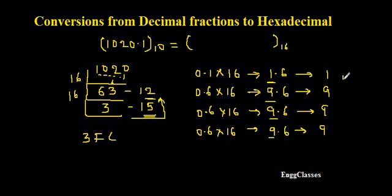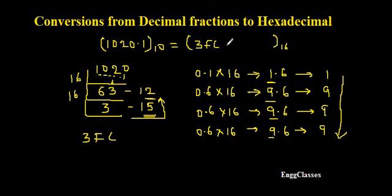I write the hexadecimal equivalent starting from the first digit: 1, 9, 9. So 1020.1 in decimal has hexadecimal integer part 3FC, and the fractional equivalent is .199. Therefore 3FC.199 is the hexadecimal equivalent of the given decimal fraction 1020.1.